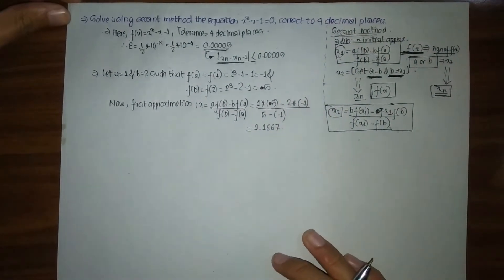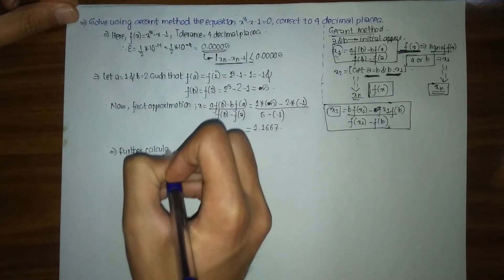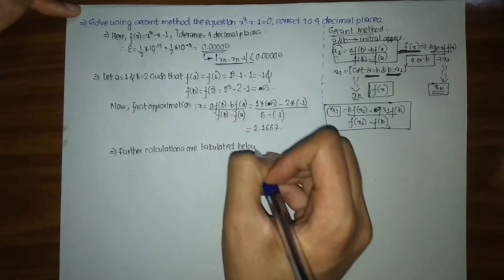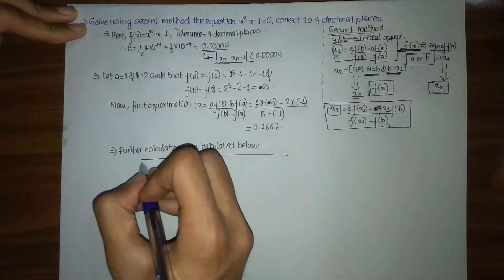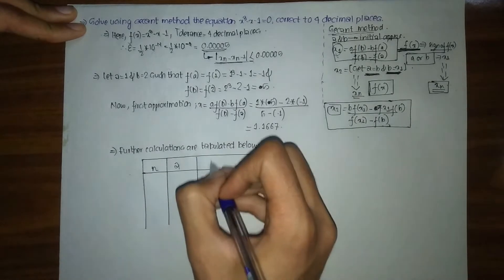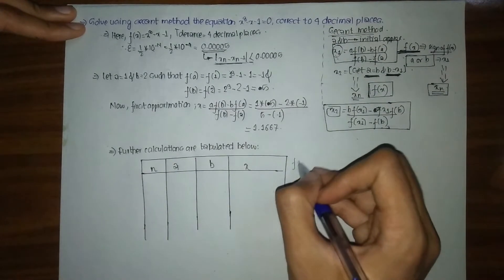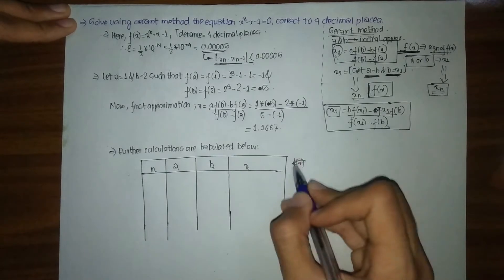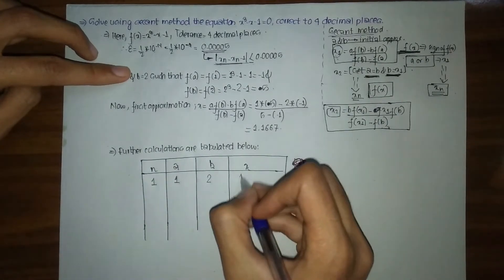For further calculations we will use a tabular form. We need to create columns for n, A, B, and x. In the second method we will not be checking the sign of f(x) — unlike false position method. For n equals 1: A is 1, B is 2, and x is 1.1667. In the next step A gets replaced by B, so A becomes 2, and B gets replaced by x1, becoming 1.1667.